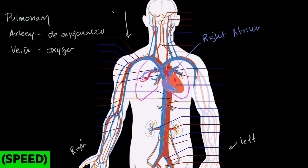The ventricles do all the pumping. The right ventricle contracts and pumps the deoxygenated blood into the pulmonary artery — going away from the heart, deoxygenated, into the lungs. The blood rubs up against the alveoli, gets oxygenated, and comes back as the pulmonary vein — going to the heart, oxygenated. The oxygenated blood flows into the left atrium. Once the left ventricle finishes pumping and expands, that oxygenated blood flows into the left ventricle, which then pumps it into the aorta.